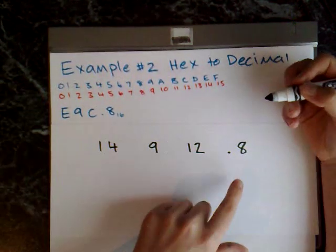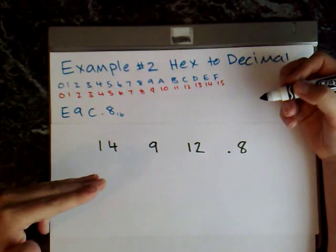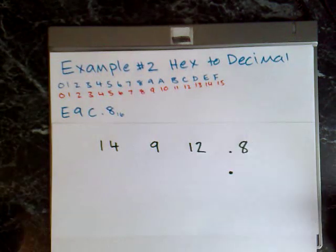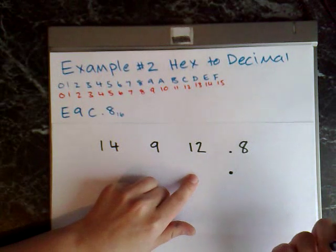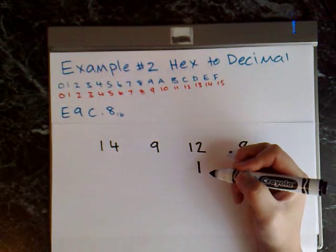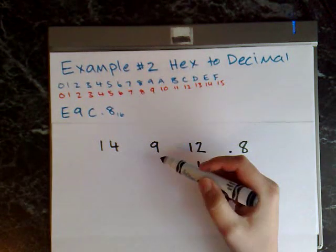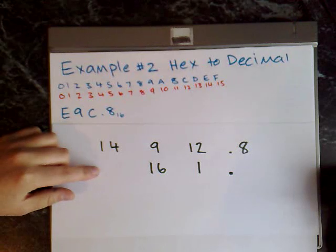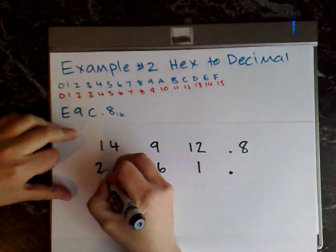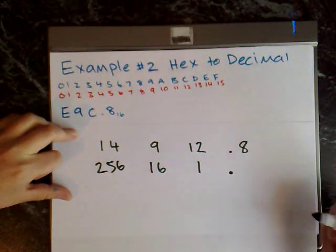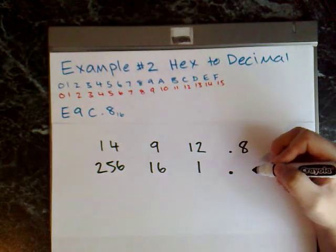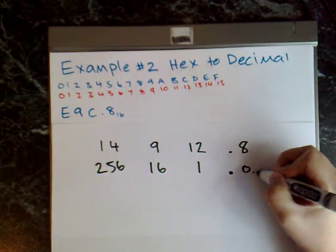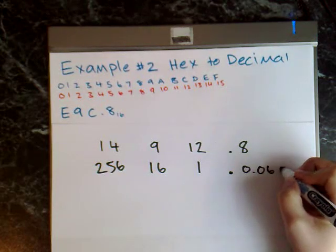And the next step now is just to write beneath each one 16 to a power. And we use 16 because we're coming from hexadecimal and hexadecimal is base 16. So 16 to the power of 0 equals 1, 16 to the power of 1 equals 16, and 16 to the power of 2 equals 256. And then to the right of the decimal, 16 to the power of negative 1, that gives me 0.0625.